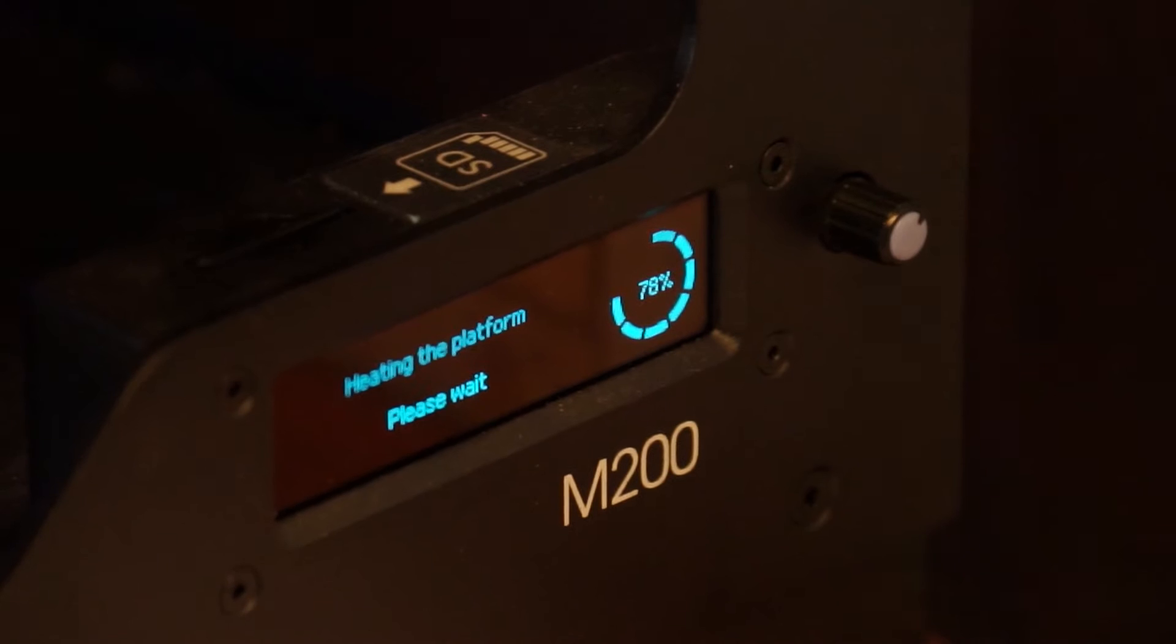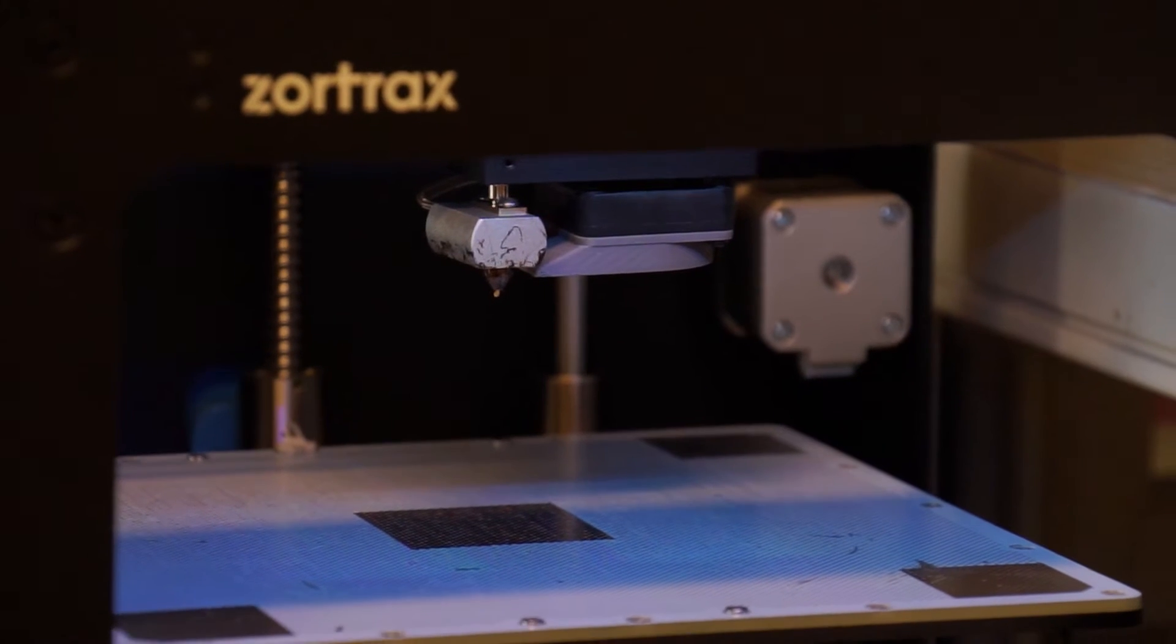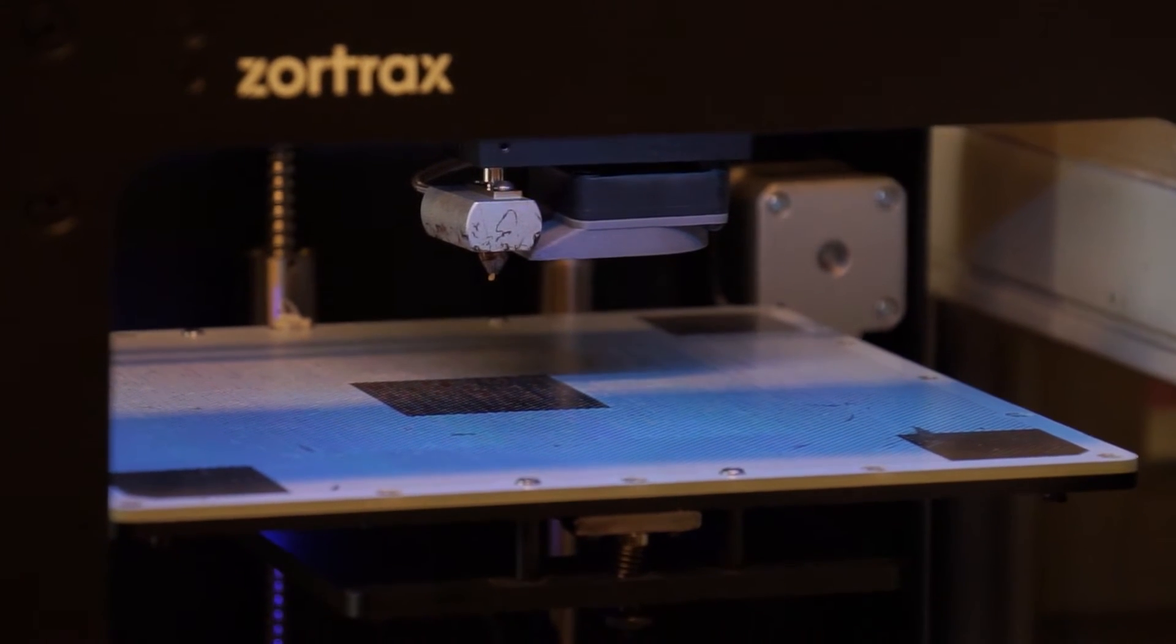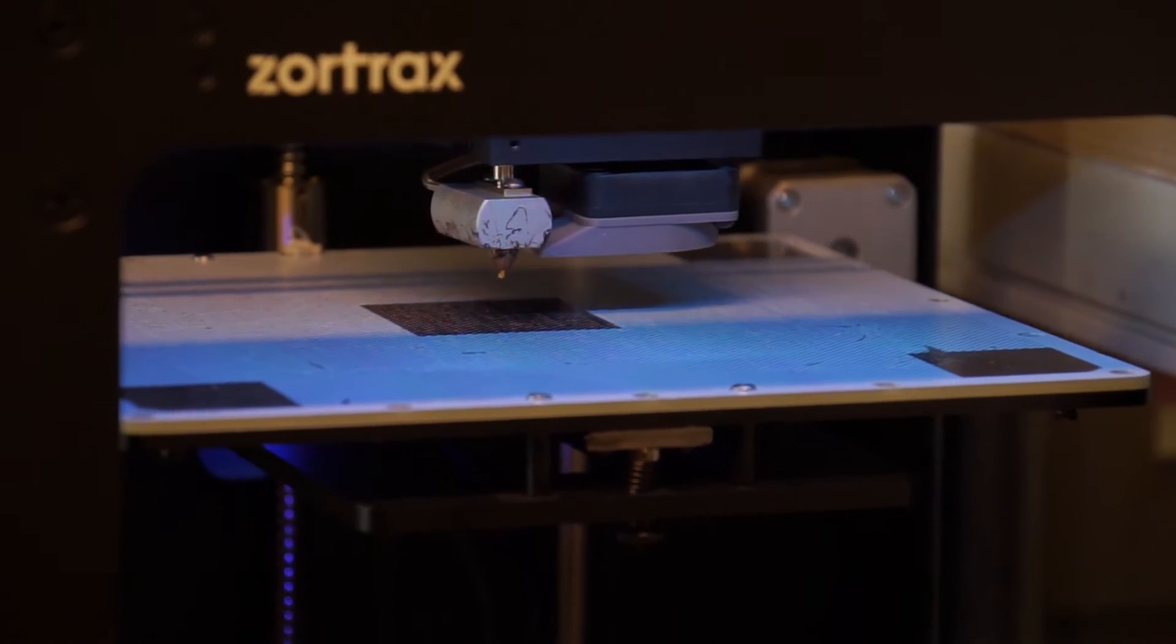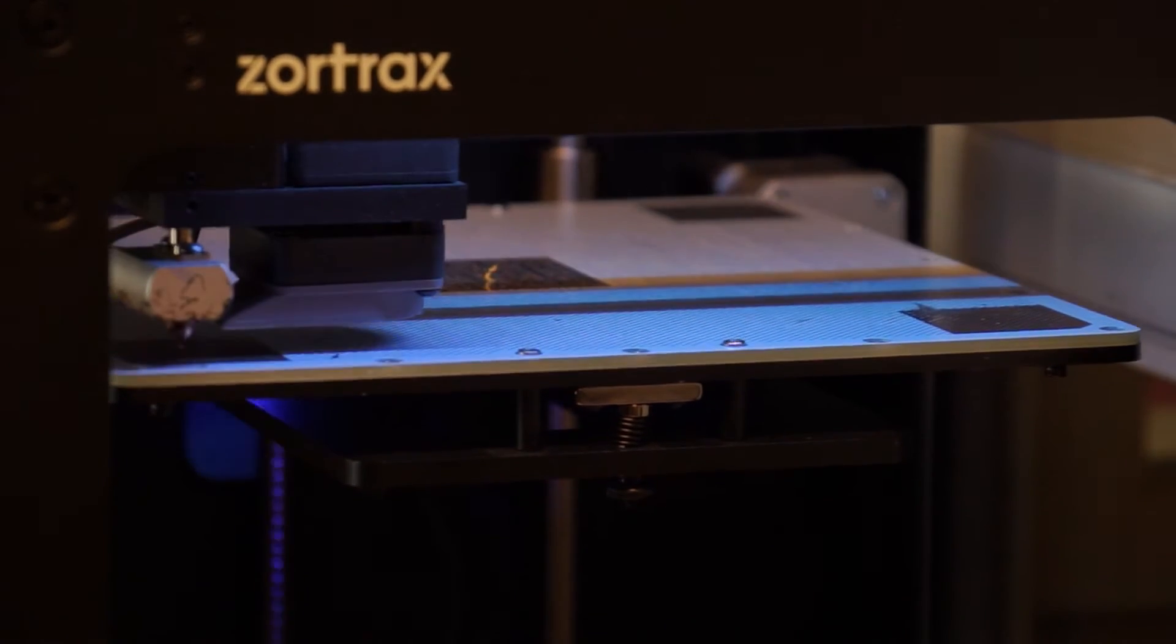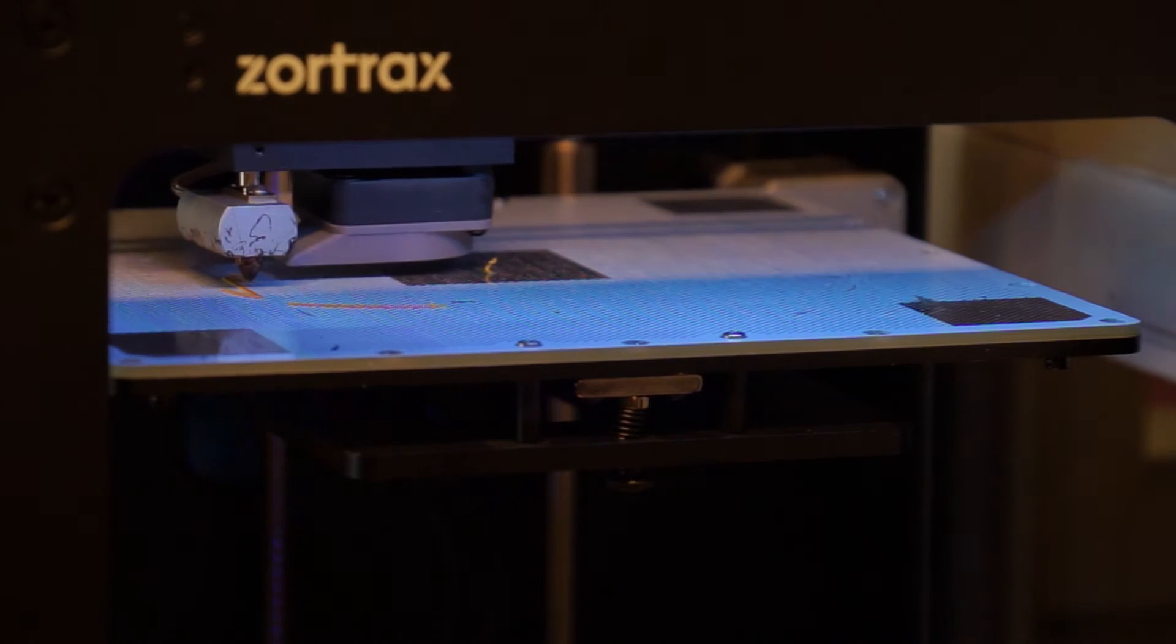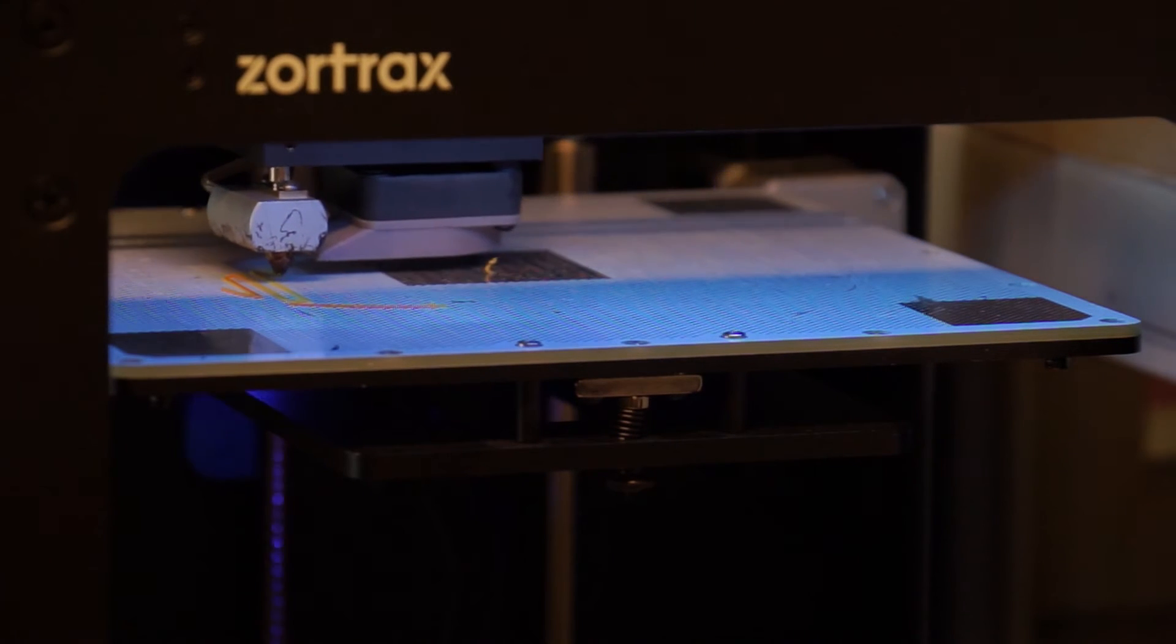First off, this one has to heat up the build plate. That means that the plastic can then stick to the base of the 3D printer. You'll see here initially it'll calibrate the 3D printer's base to make sure it's level.